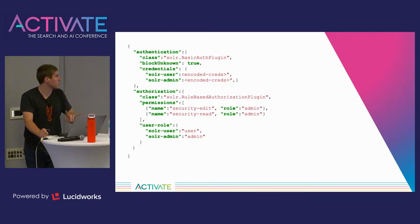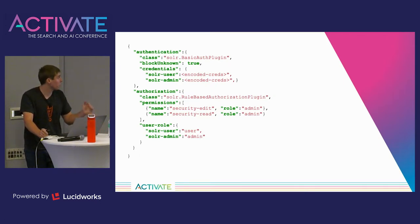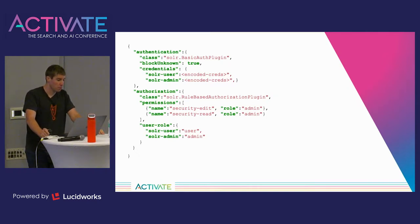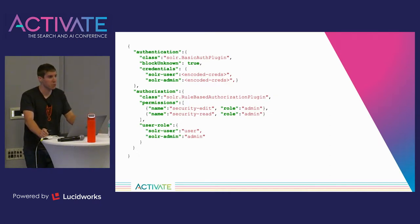We're going to be looking at a lot of security.json snippets today — if anybody has trouble reading the JSON on the board, they might want to move closer to the screen. Format-wise, security.json has three top-level properties, one for each plugin type: authentication, authorization, and audit logging. Under each top-level property there's a class that specifies the plugin you're going to use. In addition to directly changing your security.json, Solr offers APIs for authentication and authorization that let you make tweaks to the file, or you can upload the file directly into ZooKeeper.